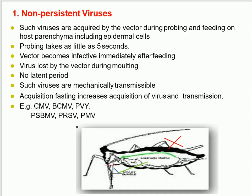Non-persistent viruses: Such viruses are acquired by the vector during probing and feeding on host parenchyma including epidermal cells. Probing takes as little as five seconds. The vector becomes infective immediately after feeding. Virus is lost by the vector during molting. There is no latent period. Such viruses are mechanically transmissible. Acquisition feeding time increases acquisition of virus and transmission. Examples: CMV, BCMV, PVY, and PMV.